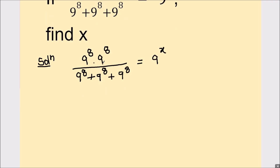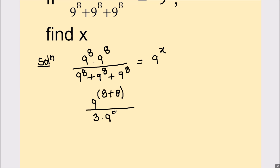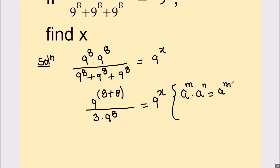Here we have 9 raised to power 8 times 9 raised to power 8, which can be written as 9 raised to power 8 plus 8, by using the laws of exponents. In the denominator we have 3 times 9 raised to power 8. Here we have used the law of exponents: a raised to power m times a raised to power n equals a raised to power m plus n.